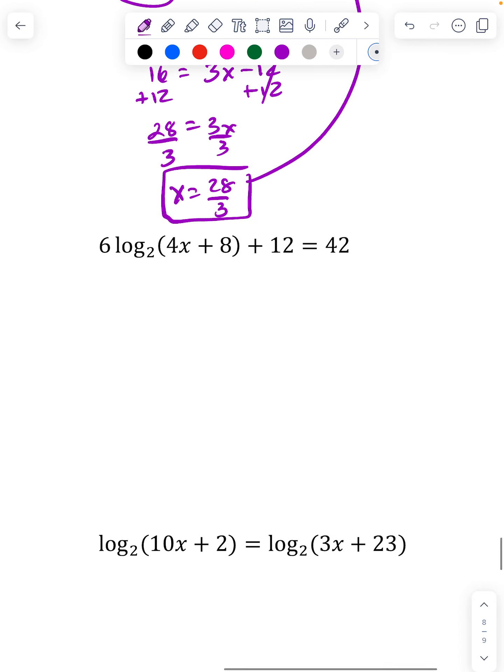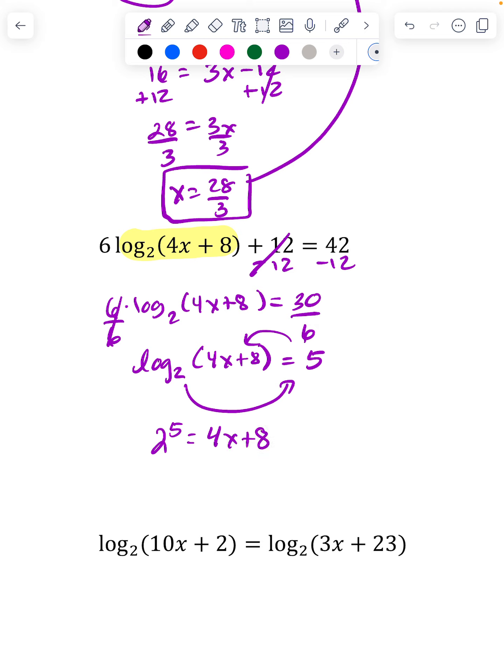So here, the log part that we need alone is this, so we need to get rid of some stuff. We're going to start by getting rid of this 12 because that's added on. That'll give us this, and it'll be equal to 30. Since we have the 6 multiplied out front, we're going to divide it by 6. So we get log base 2 of 4x plus 8, and that's going to be 5. Now we just have a single log, log base 2 of something, so we're going to go ahead and do our rewrite. 2 to the fifth equals 4x plus 8, and as soon as we do that, it becomes just a regular algebra problem.